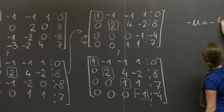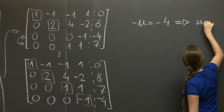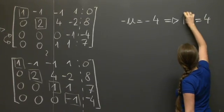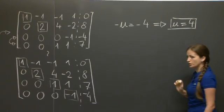So the last equation here reads -u = -4, which is, as equations go, a pretty easy one to solve. The solution is u = 4.